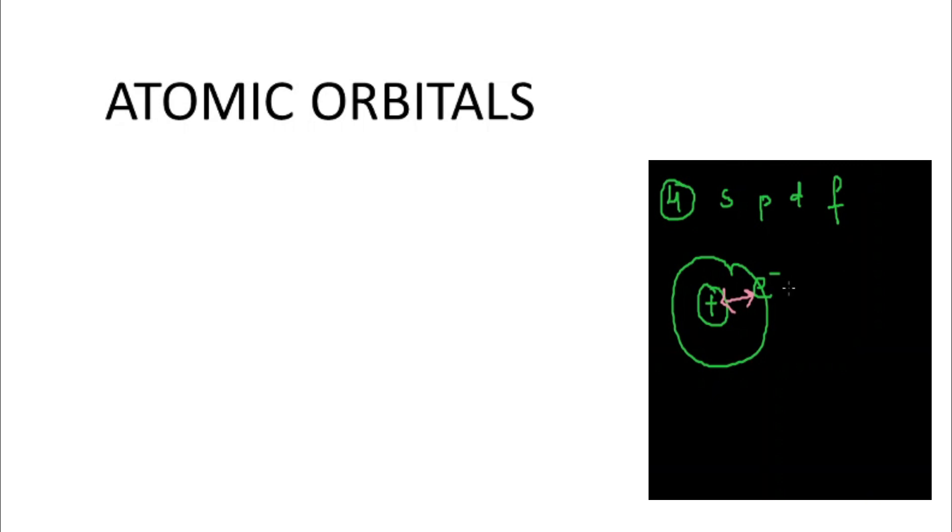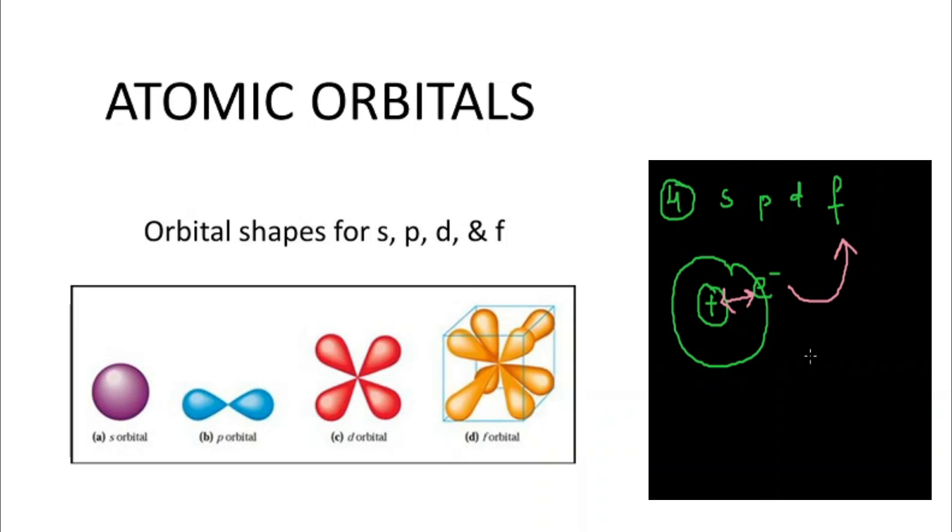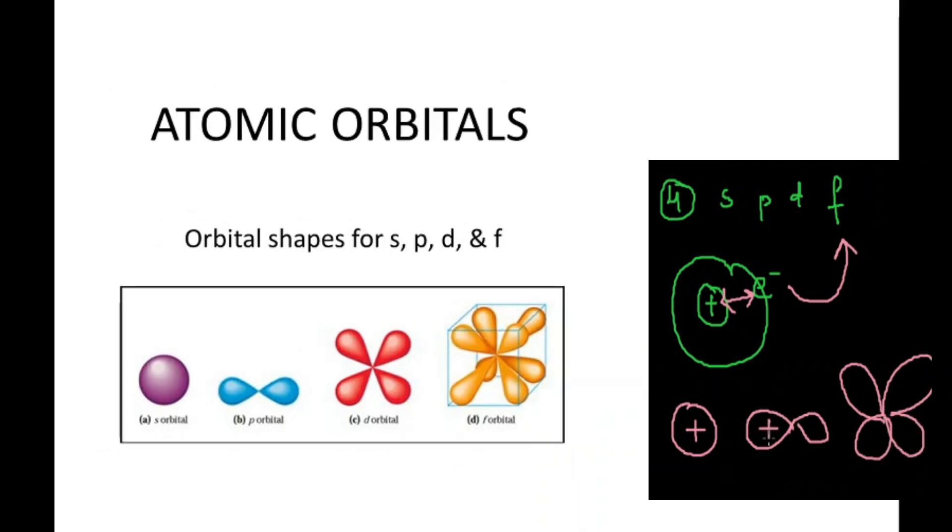There are four kinds of atomic orbitals. Learning about their shapes: S is circular in shape with positive charge throughout the sphere. P orbital has two lobes with different electron density - positive in one lobe and negative in the other. D orbital has four lobes, and similarly, F has eight lobes.